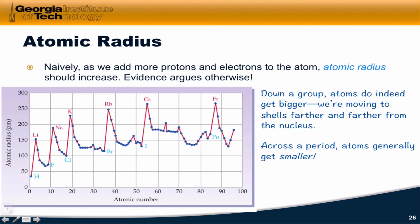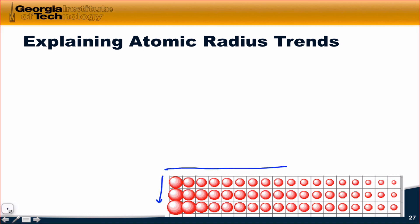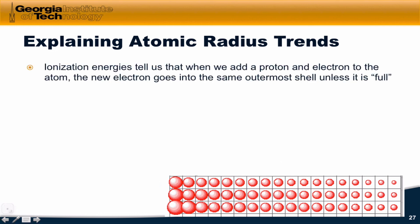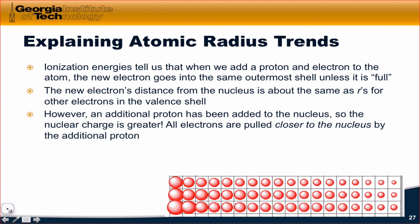What's going on there? The ionization energies also suggest this — ionization energy increases as we move across a period, even though added electrons seemed like they would be farther from the nucleus. Ionization energies tell us that as we add a proton and electron, the new electron goes into the same shell unless that shell is full, at which point the new electron is placed much farther from the nucleus. So if a shell is not completely full, the new electron is added at about the same distance as the other electrons in the valence shell. But if an additional proton has been added to the nucleus, the nuclear charge is greater, and so all of the electrons are pulled closer to the nucleus.